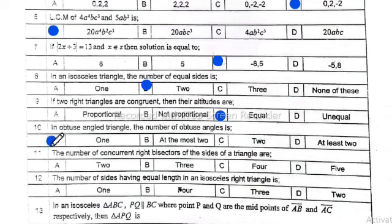Number 11: The number of congruent right bisectors of the sides of a triangle are 2. Option A is correct. Number 12: The number of sides having equal length in an isosceles triangle are 2. Option D is correct.